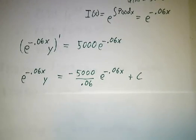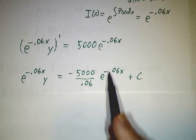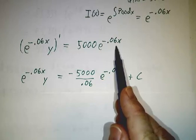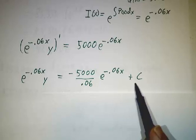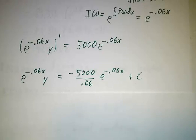Integrate both sides. Okay. E to the minus 0.06xy, and the integral of e to the minus 0.06x is just e to the minus 0.06x divided by minus 0.06. And we have our arbitrary constant.